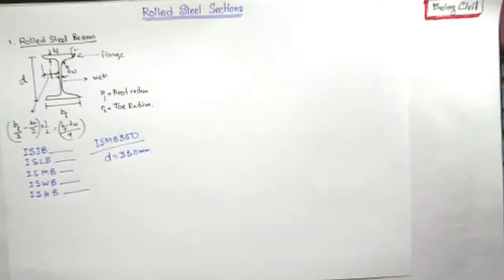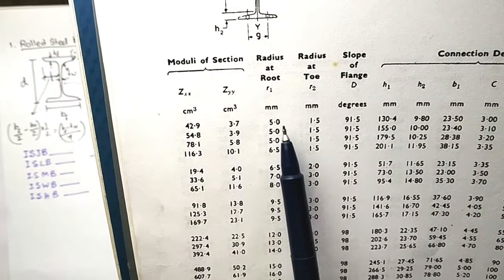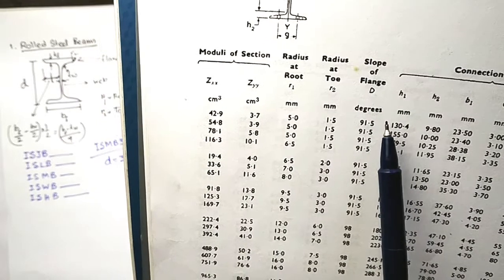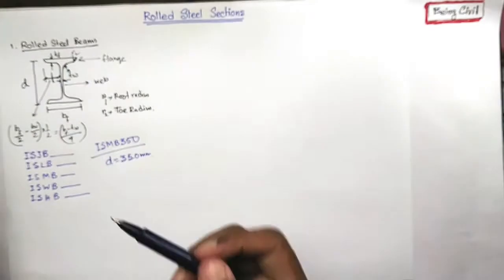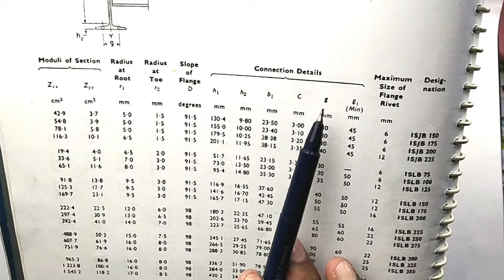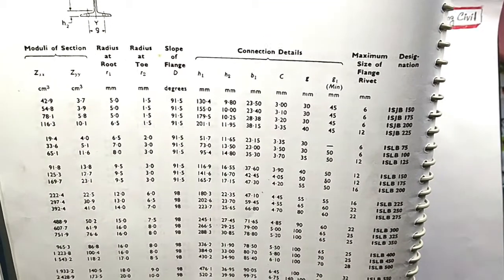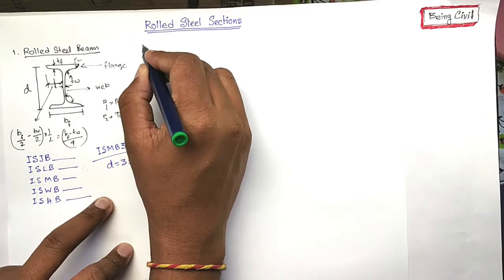And in the next page, you can find out section modulus, root radius, toe radius, slope of flange. Slope of flange is this angle. Connection details, maximum size of the rivet, all can be found out from this table. Now coming to the second type, rolled steel channels.